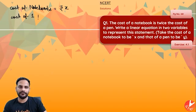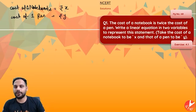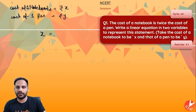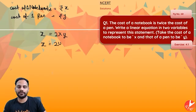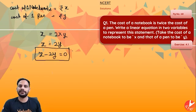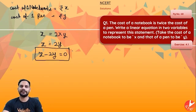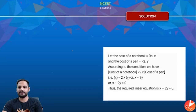The cost of one pen is rupees y. They are saying the cost of a notebook, which is x, equals twice the cost of the pen, which is 2y. So x = 2y. Shift it over: x minus 2y equals 0. This is your linear equation in two variables representing this statement.